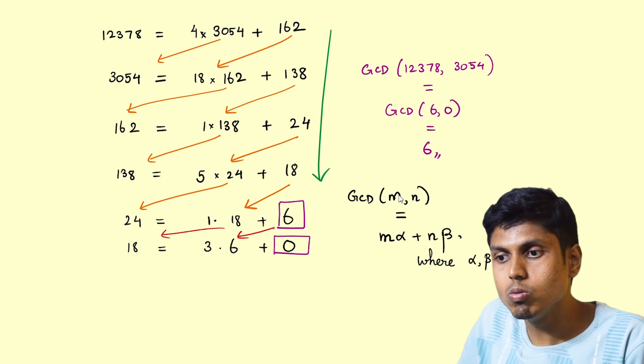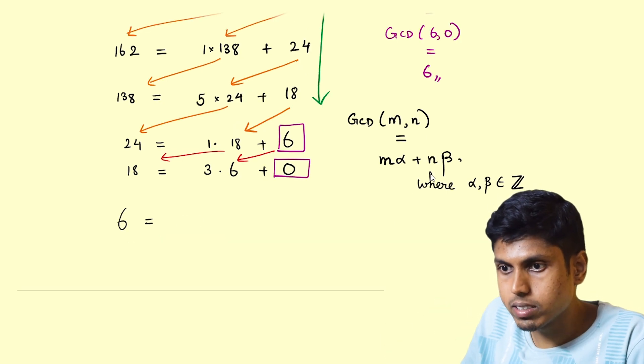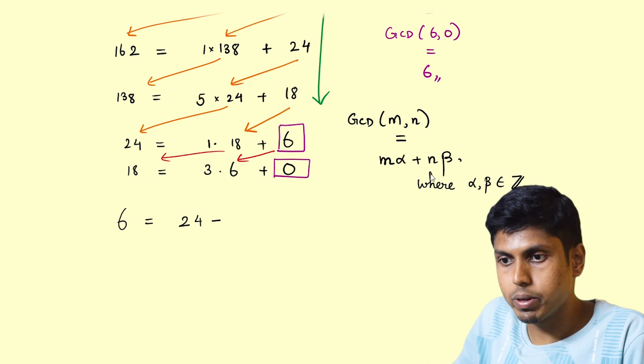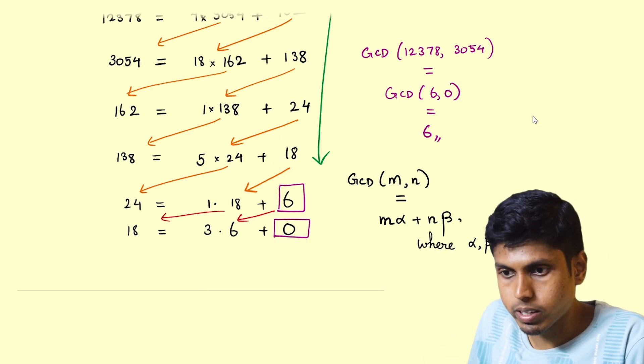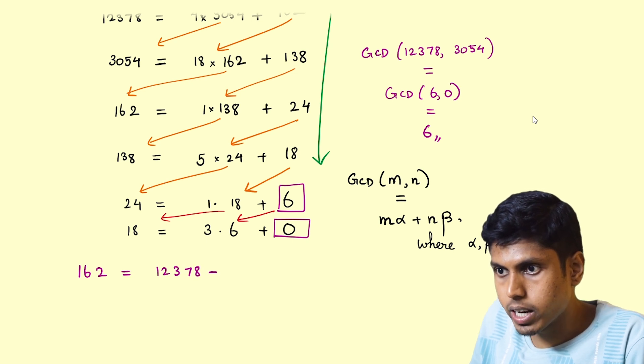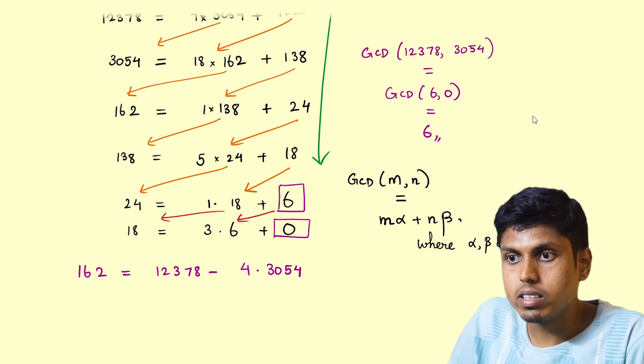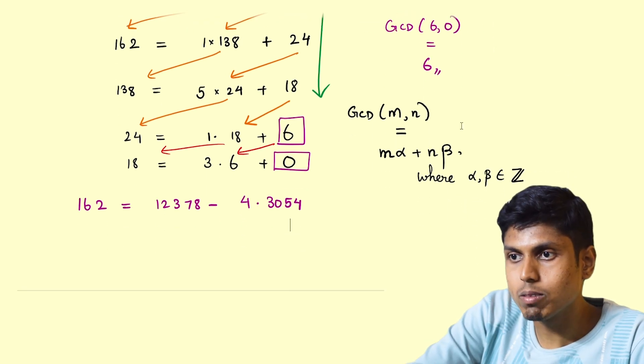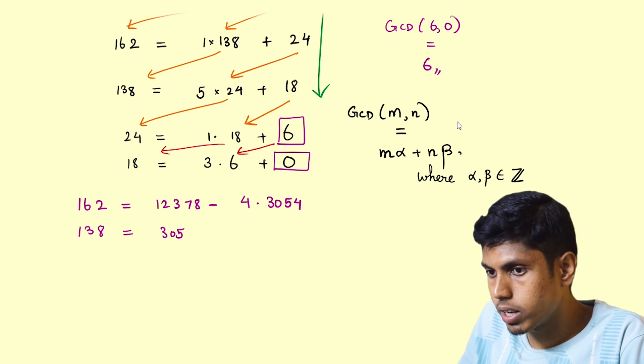It's very simple. If you move 1 times 18 to the left-hand side, you get 6 as 24 minus 1 times 18. Let me repeat the process. If you consider the number 162, it can be expressed as 12378 minus 4 times 3054. Now when you consider 138, it is 3054 minus 18 times 162.